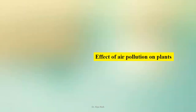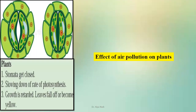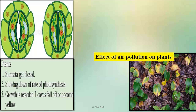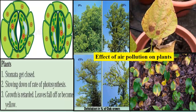Let us see the effects of air pollution on plants. First, stomata get closed — and we all know stomata is where exchange of gases takes place. If these pores are closed, plants will not get carbon dioxide, resulting in a decreased photosynthesis rate. If photosynthesis is not there, initially growth stops, and leaves either fall off or become yellow. From 20% pollution increasing to 45%, we can see defoliation in oak trees.